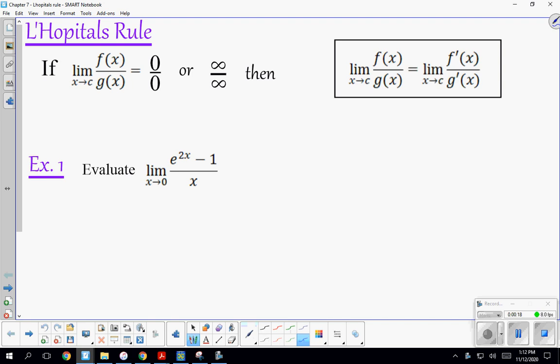The rule says if we try direct substitution and it results in either 0/0 or ∞/∞ indeterminate forms, then the limit of the original is equal to the limit of the quotient of the derivatives. We're not really finding the derivative here, we're finding a limit.